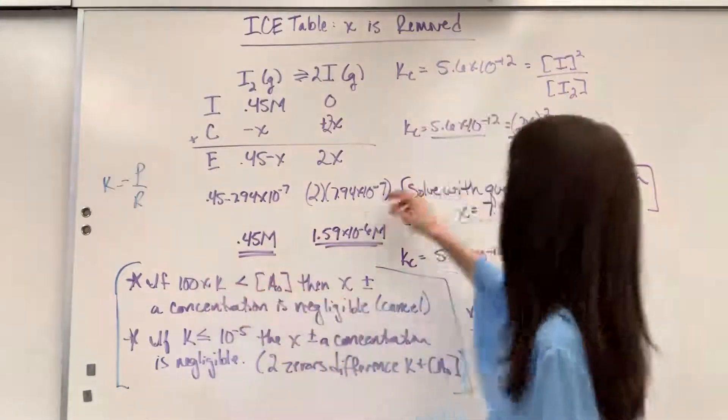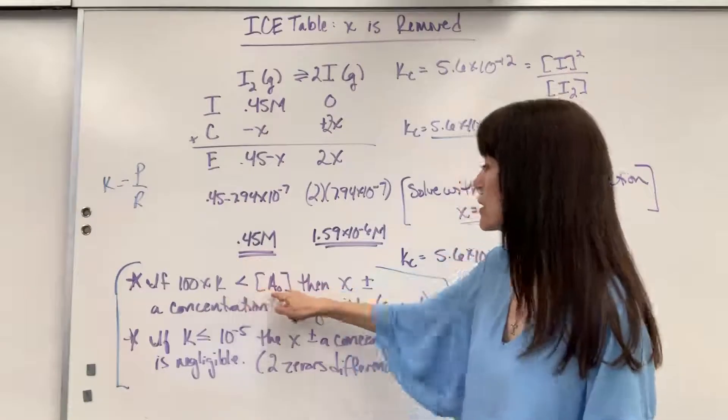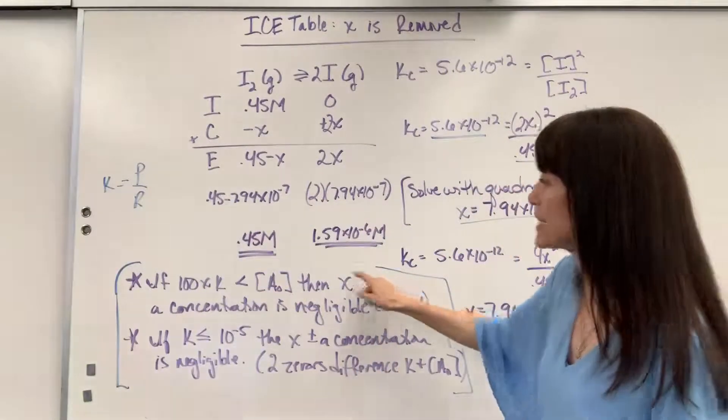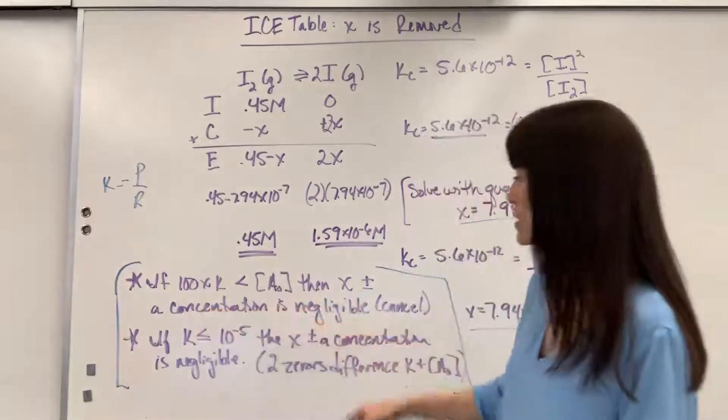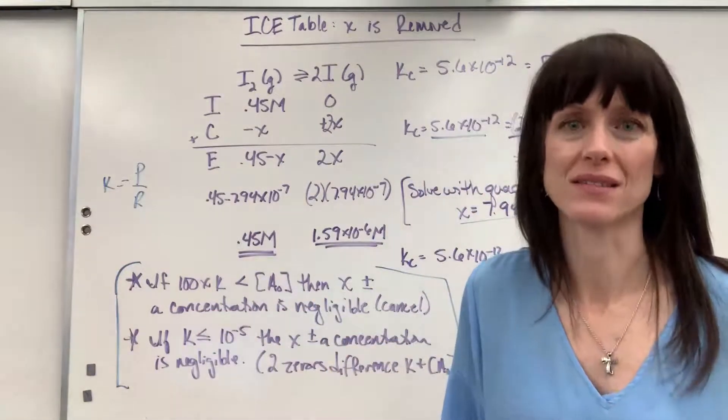So here's the official takeaway. If 100 times K, so 100 times this, is still smaller than your initial concentration, that 0.45, then the x is added or subtracted to a concentration is negligible. You cancel it out.